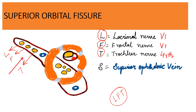The trigeminal nerve's first division is the ophthalmic division, represented as V1 — V being the fifth cranial nerve. The lacrimal nerve and the frontal nerve are branches of the ophthalmic division of the trigeminal nerve. The trochlear nerve is the fourth cranial nerve. Also passing through the superior compartment is the superior ophthalmic vein.